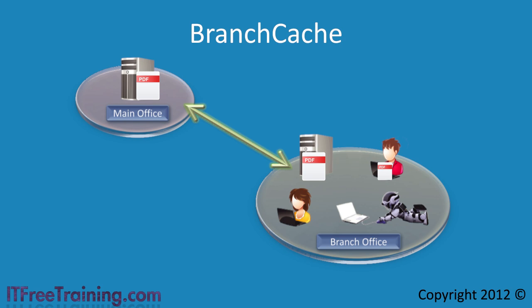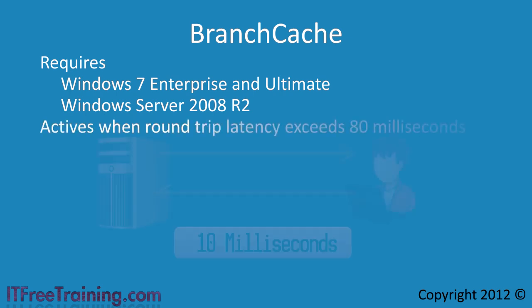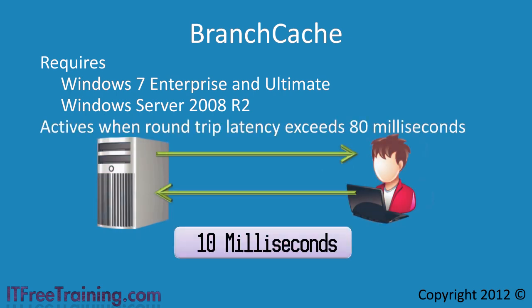In order to start using Branch Cache, you require Windows 7 Enterprise or Ultimate Edition and also Windows Server 2008 R2. Once you have configured Branch Cache to operate, it will automatically by default kick in when the round trip latency from your client to server exceeds 80 milliseconds.